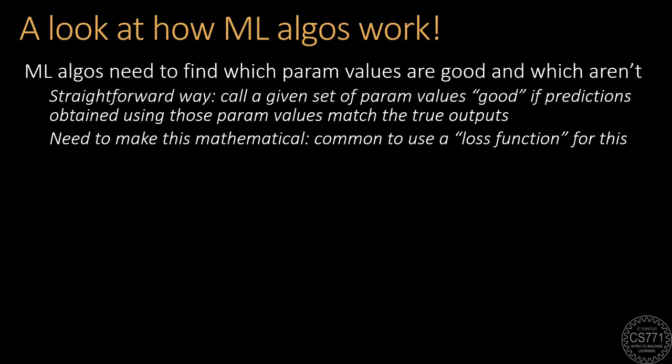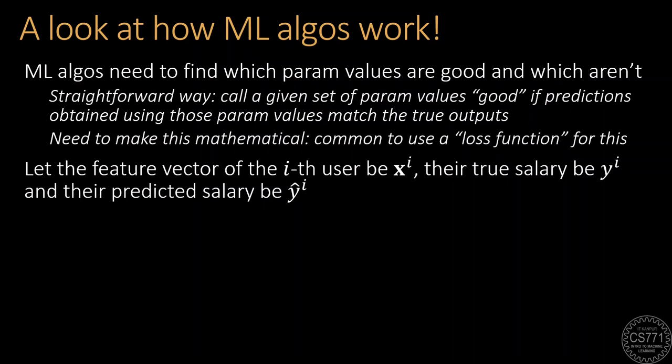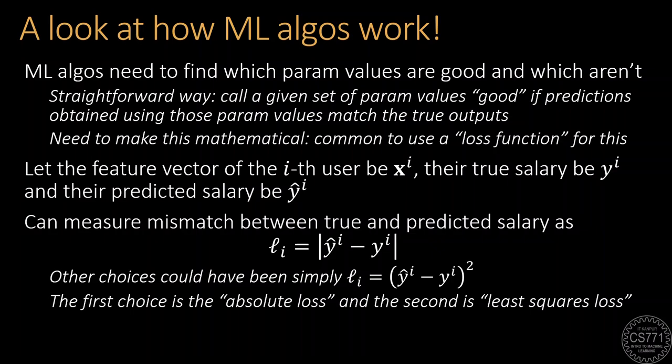Machine learning algorithms need to figure out which parameter values are good and which aren't. A very simple and obvious way to do this would be to call a given set of parameter values good if predictions made using those parameter values match the true outputs and if they don't we would call those set of parameter values bad. However, we need to make this notion more mathematical so that we can write code to implement the machine learning algorithm and so it's common to use something called a loss function for this purpose. Let the feature vector for the ith user be called XI and their true salary be YI and their predicted salary be Y hat I. To find out whether a set of parameter values is good or bad we can measure the mismatch between the true salary of the ith user and the salary that was predicted by the model using those parameter values. There are many ways to measure the mismatch and in this case popular examples would be the absolute loss or the least squares loss.